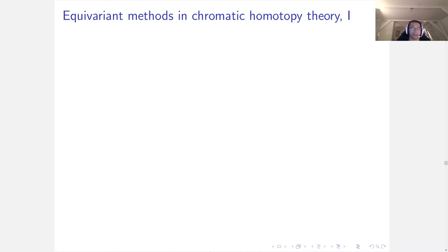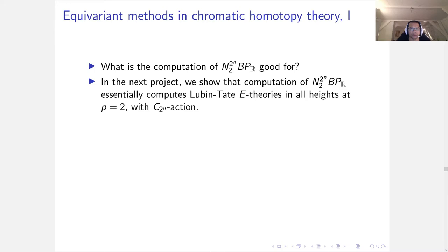A natural question is, why do we care about norm of BP_R? What's the computation good for? In the next project, we show that computing norm of BP_R essentially computes all the Lubin-Tate E-theories in all heights at prime 2 with the C_2^n action.